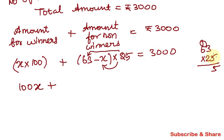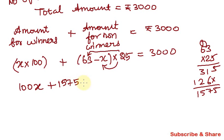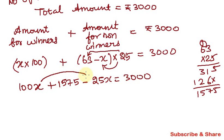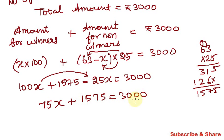Calculating 25 × 63: 3 × 5 is 15, carry over 1; 6 × 5 is 30, so 31. Then 3 × 2 is 6, and 6 × 2 is 12. So 25 × 63 = 1575. So the equation becomes 100x minus 25x plus 1575 equals 3000, which simplifies to 75x plus 1575 equals 3000.